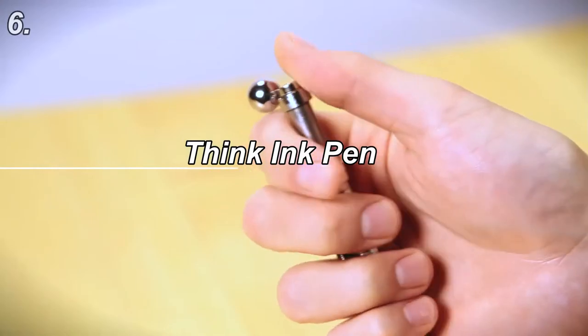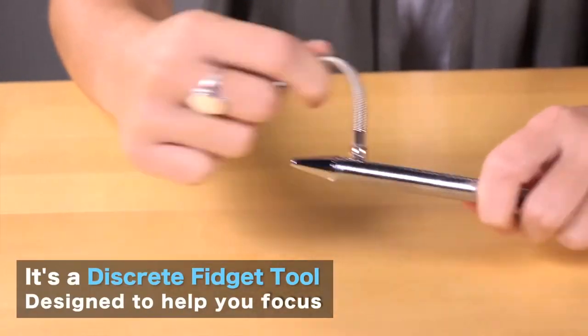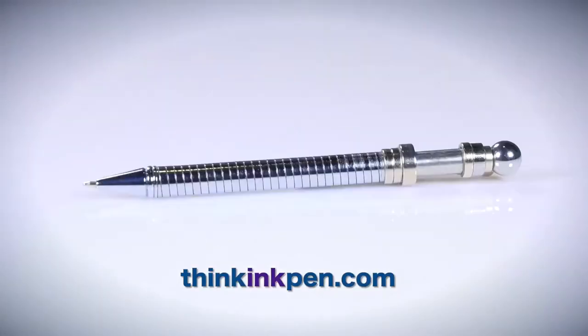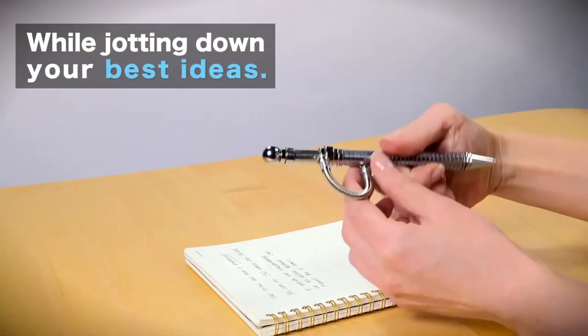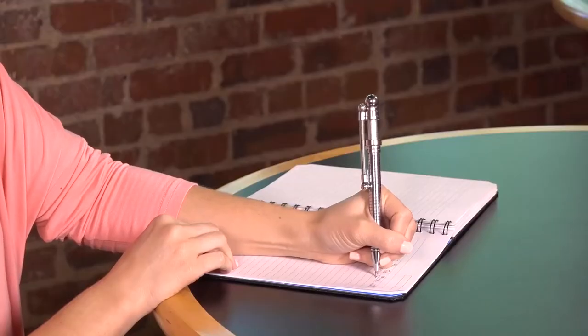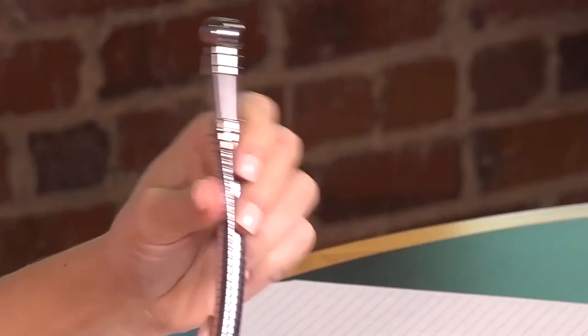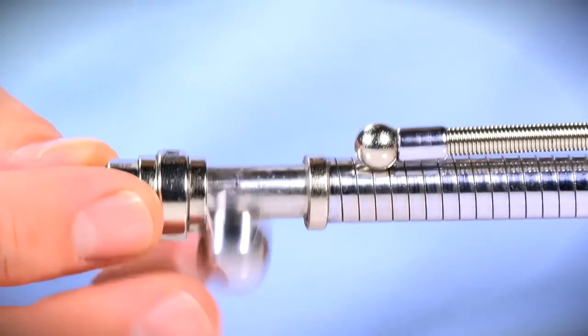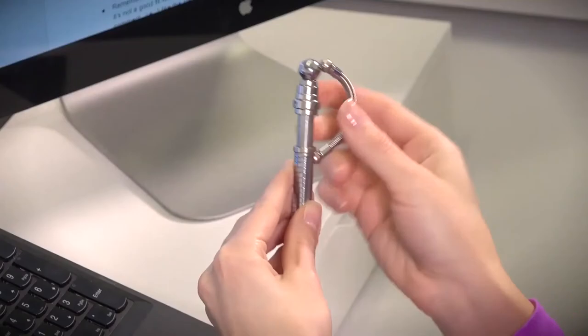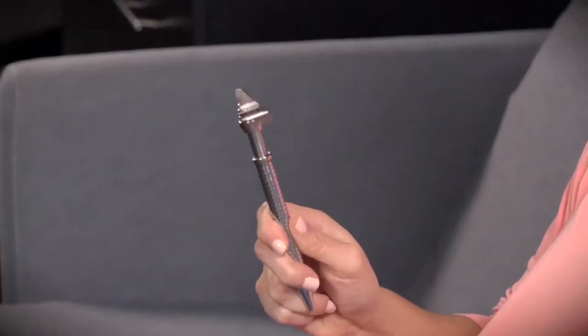Next fidget toy in line is the Think Ink Pen. This magnetic anti-stress ballpoint pen is an incredible tool to have during important discussions or meetings. In addition, it is also considered an ideal fidget toy for students at school where they can focus and write out some brainstorming ideas. Do note that this is more of a writing tool rather than a fidget tool. Changing of ink cartridge is also a feature if it ever runs out.